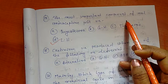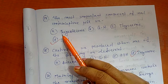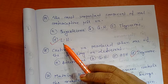Question number 14 is: What is the most important component of oral contraceptive pill? There are four options: A) Progesterone, B) GH (Growth Hormone), C) Thyroxine, D) Luteinizing Hormone (LH). So the right option is A, Progesterone.